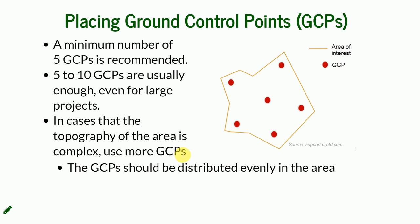More important than the number of GCPs is their distribution. They should be distributed pretty evenly — not measured precisely, but not clustered. If you place five GCPs all in the same spot or all in the middle, it's not enough. Even ten or fifteen GCPs all in the middle won't do, but five well-distributed GCPs will be okay.